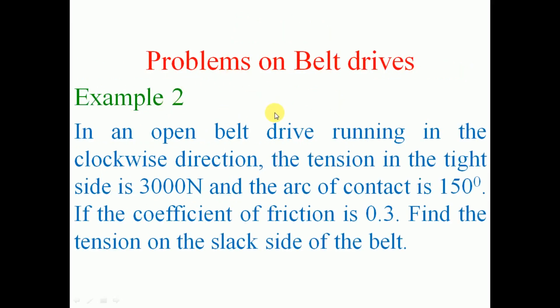I will now solve Example 2. In an open belt drive running in the clockwise direction, the tension in the tight side is 3000 N and the arc of contact is 150 degrees. If the coefficient of friction is 0.3, find the tension on the slack side of the belt. The tension on the tight side and the arc of contact and coefficient of friction are all given.